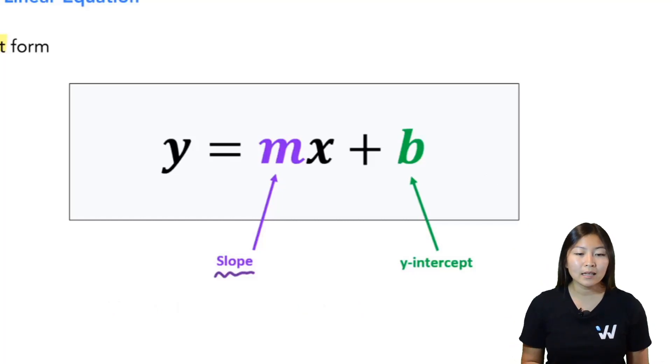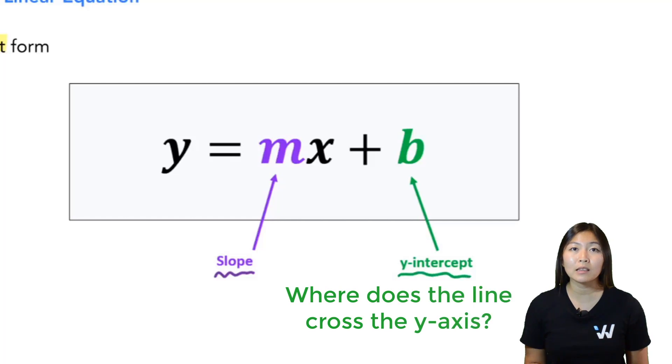b is the y-intercept. The y-intercept is where the line crosses over the y-axis, is where it meets the y-axis.